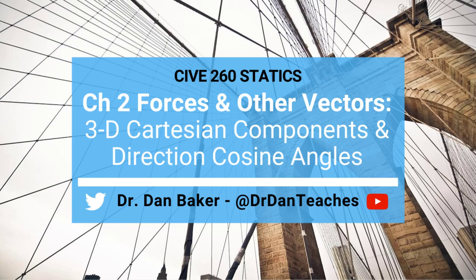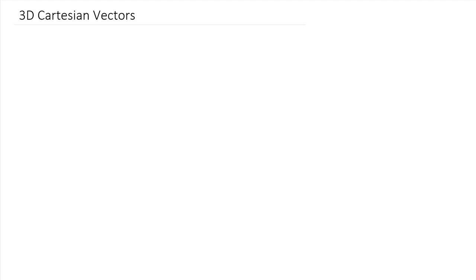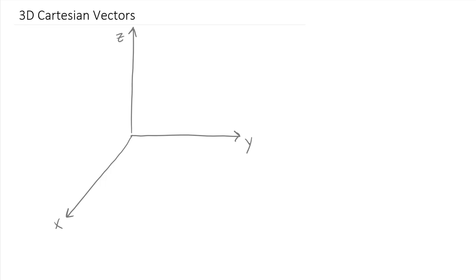Hello students of statics. In this video today we're going to take a look at 3D Cartesian vectors, which are focused on a three-dimensional coordinate system. Let's draw a right-hand coordinate system — we'll pick y going across this direction, x coming out here, and since this is a right-hand coordinate system, x crossed into y gives z going upwards. Now let's go ahead and draw a vector in this space, drawn up in this direction.